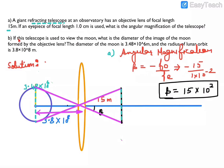So the next part is the main key point, which the diagram doesn't come generally. This diagram is like this — first let's see this diagram. This is a telescope lens.